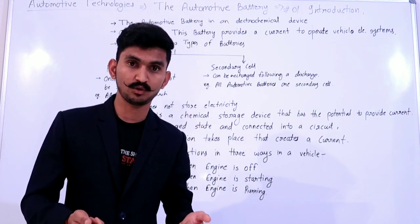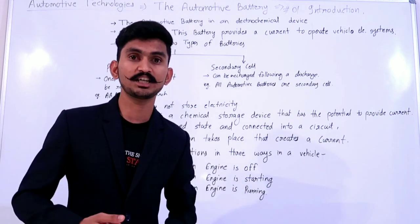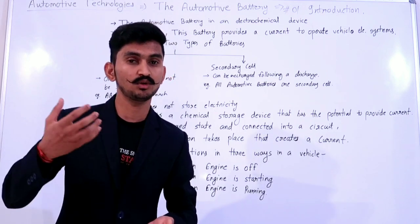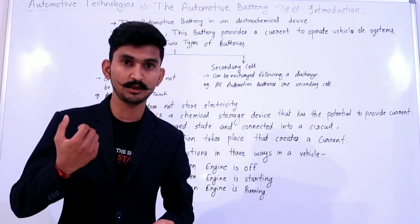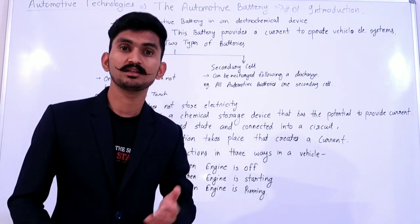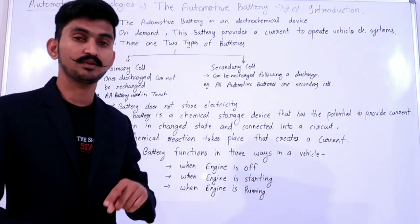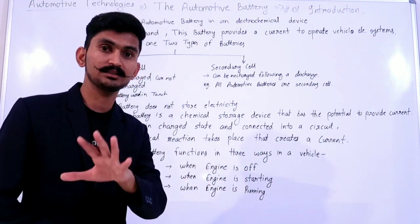When you demand current, you connect the battery in a circuit. When it is loaded, then the load demands current, and the battery will provide sufficient current to operate that load.